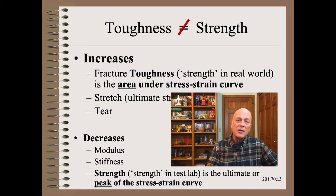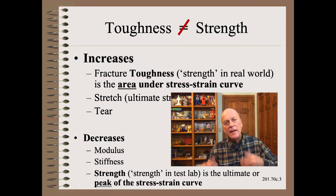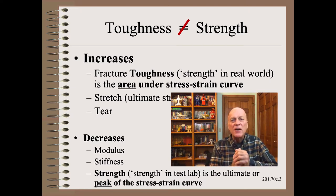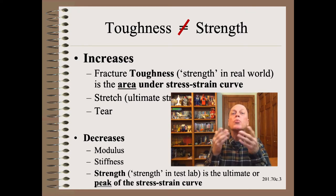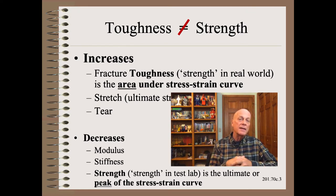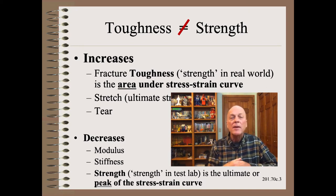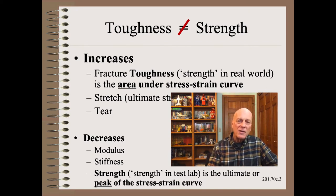In technical terms, toughness is the area under the stress-strain curve, while strength is the peak of the stress-strain curve. In layman's terms, toughness is the strength in the real world, while strength is the strength in the test lab.